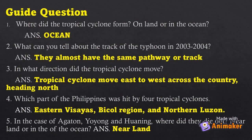Guide questions: One — Where did the tropical cyclones form, on land or in the ocean? Answer: In the ocean. Two — What can you tell about the tracks of typhoons in 2003 and 2004? Answer: They almost have the same pathway or track. Three — In what direction did the tropical cyclones move? Answer: Westward across the country, heading north. Four — Which part of the Philippines was hit by four tropical cyclones? Answer: Eastern Visayas, Bicol region, and Northern Luzon. Five — In the case of Agaton, Yoyong, and Juaning, where did they die out — near land or in the ocean? Answer: Near land.